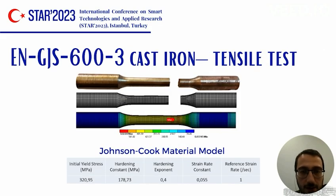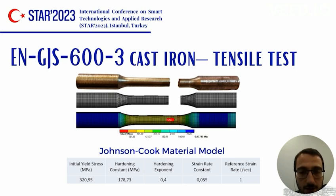With dynamic analysis in an FEA software, the Johnson-Cook material model has been obtained by tensile test. The analysis has given the same rupture point as the result of the material model. Also, a gradual rupture is seen in both the experiment and the simulation, provided by the Johnson-Cook damage model, which is not shared in detail in this study.